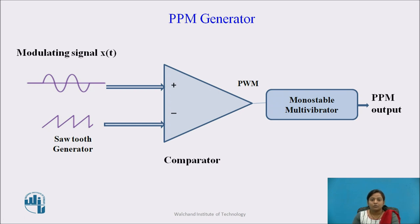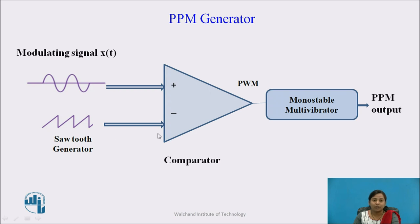Next, the PPM generator. Here, the comparator circuit is used. To the non-inverting terminal of this comparator, the modulating signal — that is, the continuous time signal x(t) — is applied. To the inverting terminal, a sawtooth wave is applied.